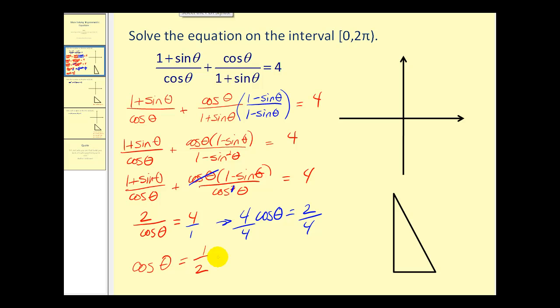Having a cosine function value of one-half should remind you of a 30, 60, 90 right triangle, where the cosine of a 60 degree angle is equal to one-half. That tells us our reference angle will be 60 degrees.